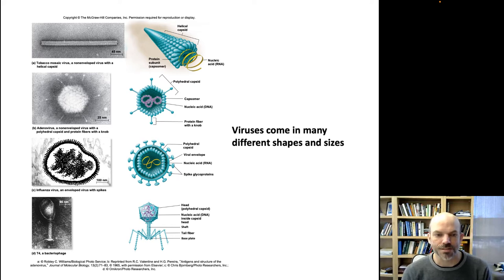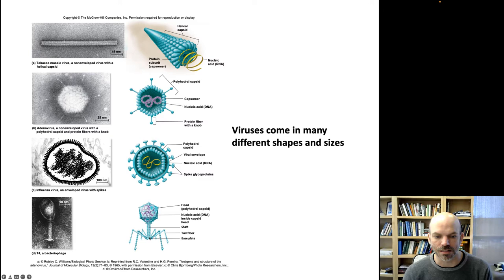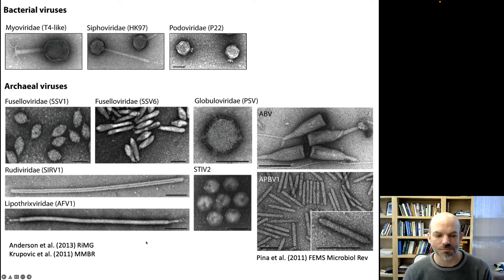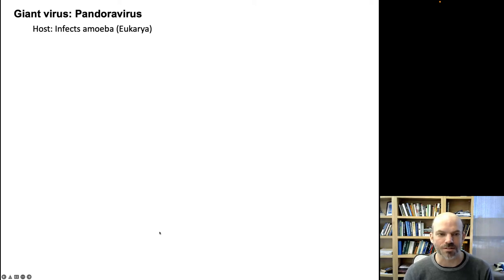Viruses also come in different shapes and sizes. They can come in long rods, like this virus that infects tobacco plants. The virus that causes the common cold looks like this. The bacteriophage — the virus that infects bacteria — is very commonly used in the lab and looks like a moon lander with a head and a landing gear. Viruses that infect archaea seem to be especially oddly shaped: there are lemon-shaped viruses, champagne bottles with antennae, and super long filament viruses. Lots of different shapes — not just diversity in genome but also diversity in morphology.